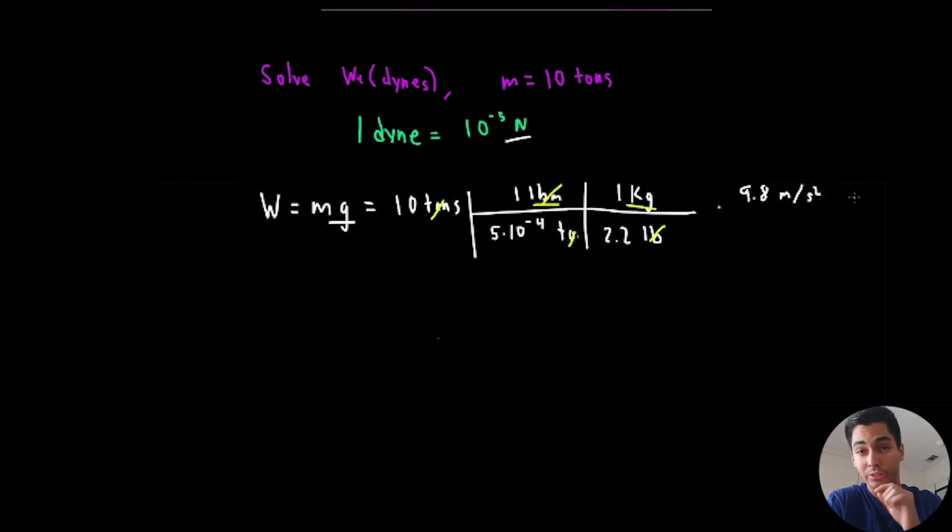Remember I only said I was going to do it once. This is actually just going to cancel out to give me newtons. Does that make sense? If not, go back to that part when I explained it. So now I have 10 divided by 5 times 10 to the negative 4 divided by 2.2 times 9.8 newtons.